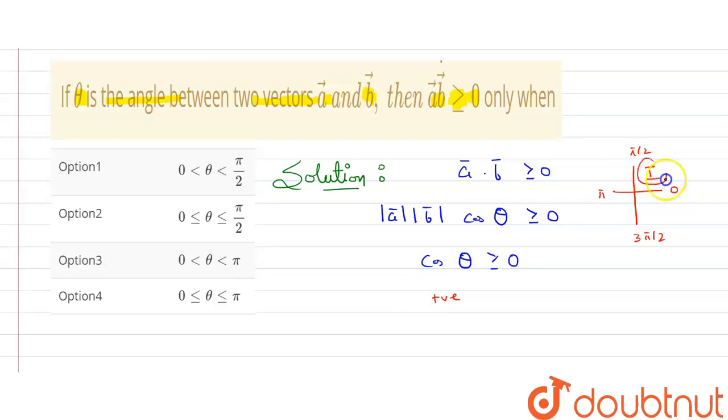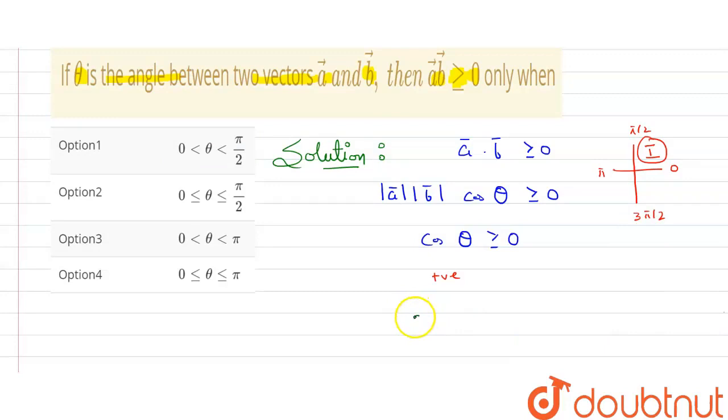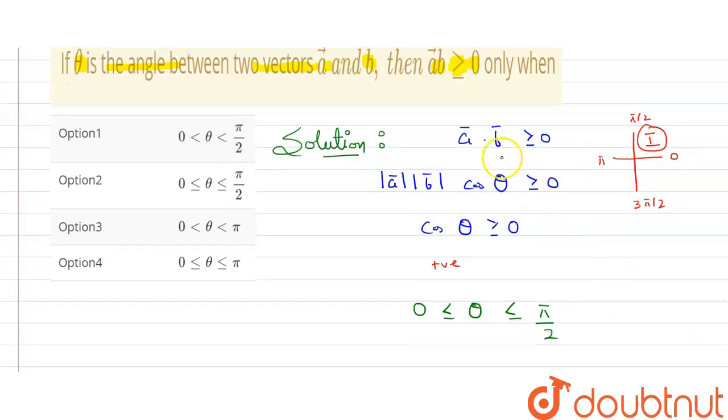So it means it will lie in first quadrant. First quadrant is from zero to pi by two, so we'll write here zero, here we'll write theta - we are writing the limit for theta - and here pi by two. This will be the limit of theta. Then only this condition will be satisfied.